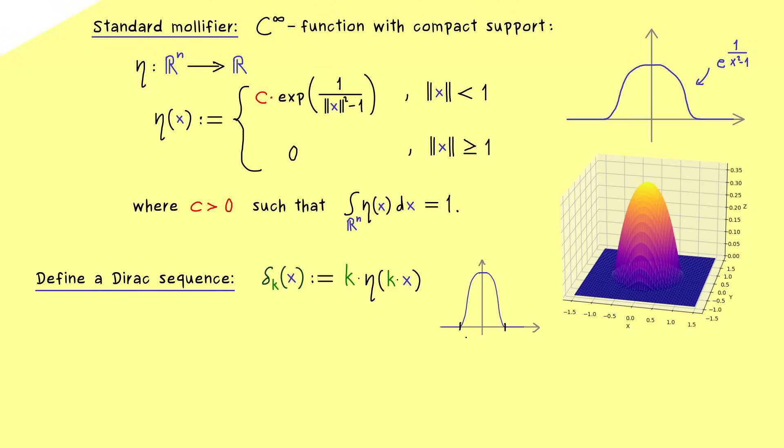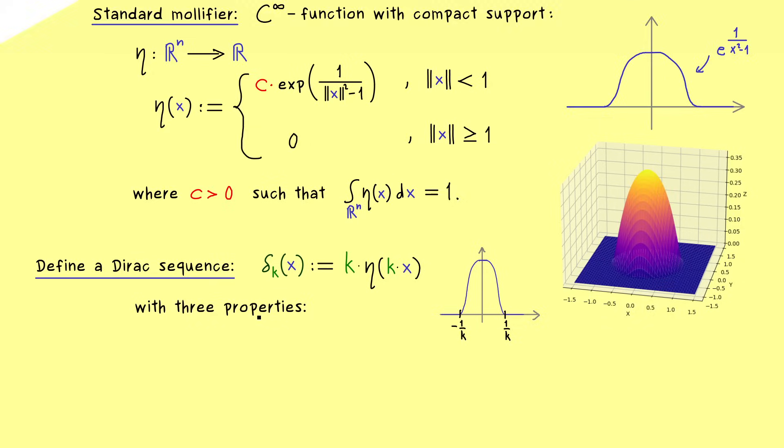So this is something you can already remember: if we increase our n, the graph here gets smaller and smaller but also higher and higher. And there you might already see that this makes it into a Dirac sequence. But actually, a Dirac sequence is just defined by three properties.